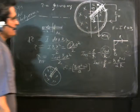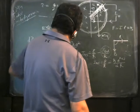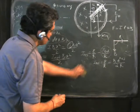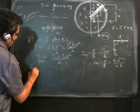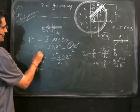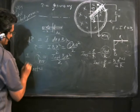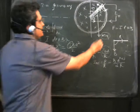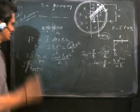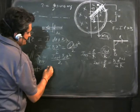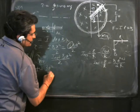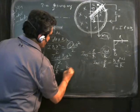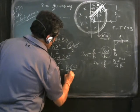Substituting I_net into the torque expression, the net torque due to current flowing in the conductor is T_net = (B·a²/2)·[E/R − B·a²·ω/(2R)]. Note this is the torque due to current only, not yet the final net torque including the weight contribution.